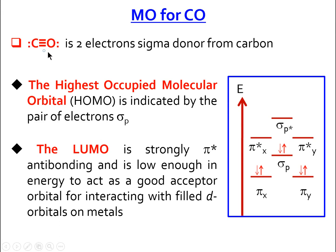CO, according to Lewis's structure, has a lone pair on carbon and another lone pair on oxygen. So CO, by theory, is a donor from oxygen or from carbon. Since carbon is less electronegative than oxygen, the donation takes place from carbon. CO is neutral and a two-electron sigma donor.